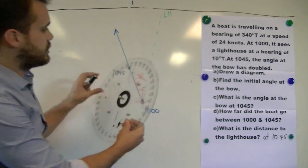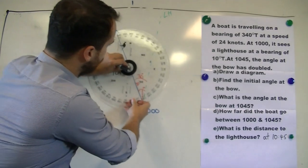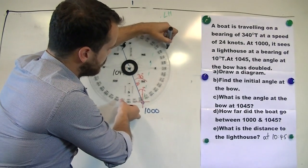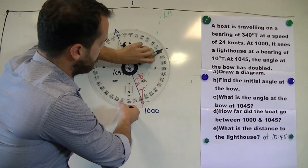So again, taking our protractor, we'll put this here. You can see there's my 60 degrees angle at the bow.